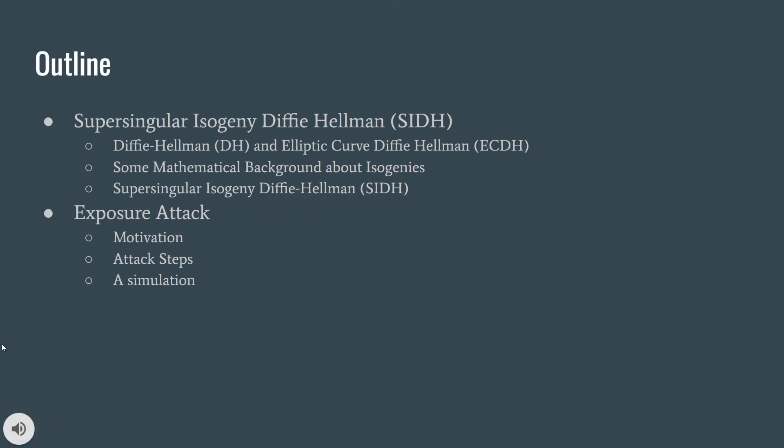I will start with explaining supersingular isogeny Diffie-Hellman key exchange algorithm, which includes classical Diffie-Hellman and elliptic curve Diffie-Hellman exchanges. I will then give some mathematical background about isogenies, and then finally I will explain what supersingular isogeny Diffie-Hellman, SIDH, is.